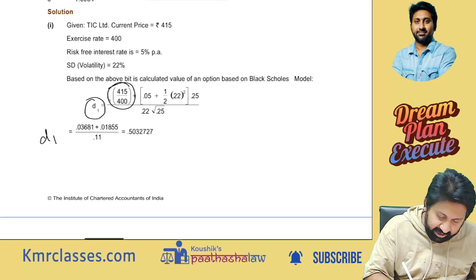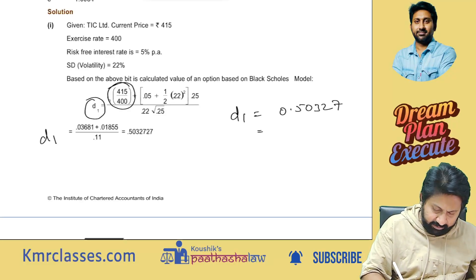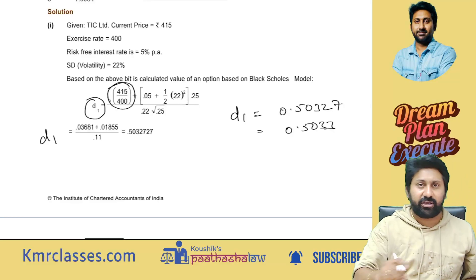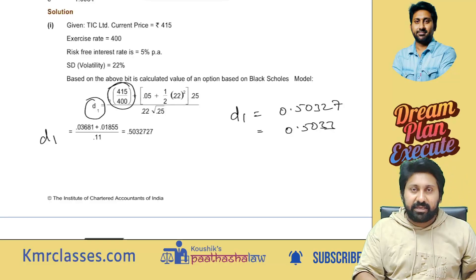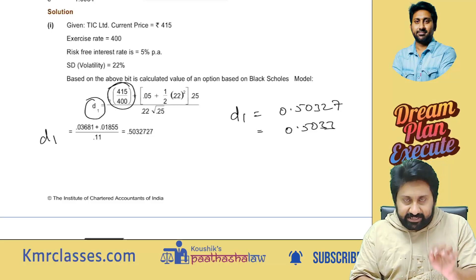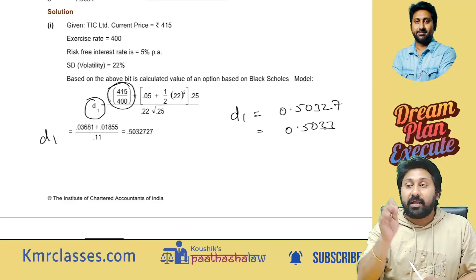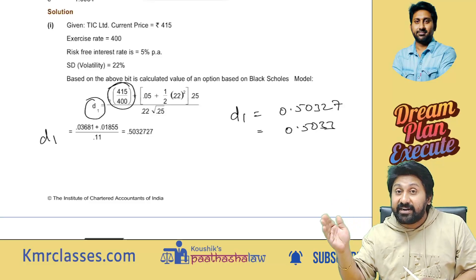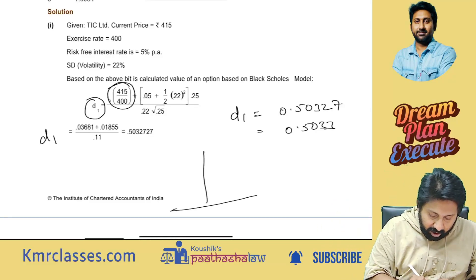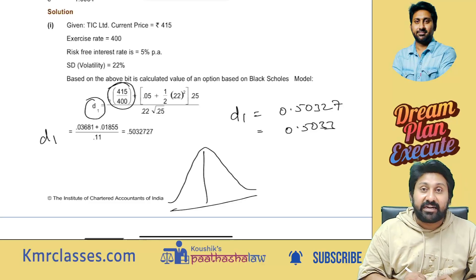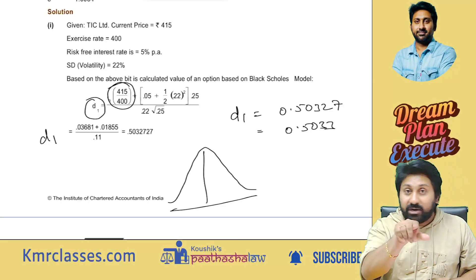D1 is given as 0.5033. Now, D1 means what? D1 is the Z-value of the right-side tail to a target number on the normal distribution table. D1 is positive; D2 can be negative — that's on the left side. Negative is not the number itself; it represents probability. Probability of occurrence is on the right side; probability of non-occurrence is on the left side.